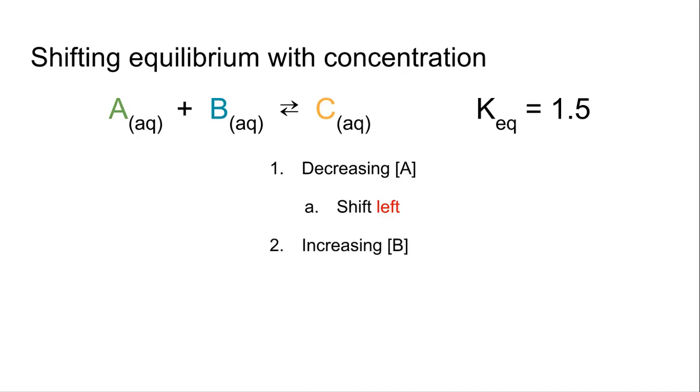If we increase B right there, we have too much B. It's going to want to get rid of it. It's going to shift to the right. It's going to move that equation, the forward reaction to the right. It's going to try to produce more C to get rid of that B. So it's going to shift to the right there.